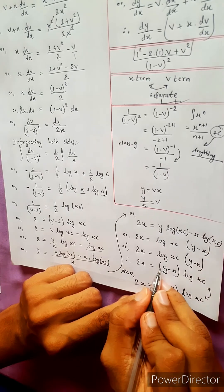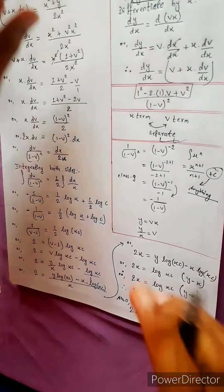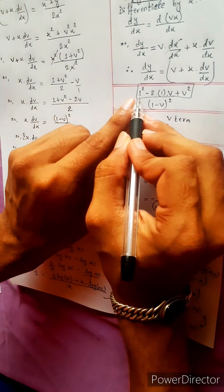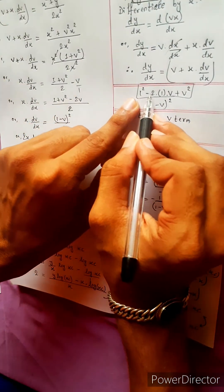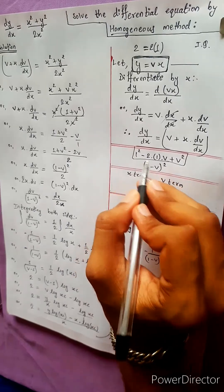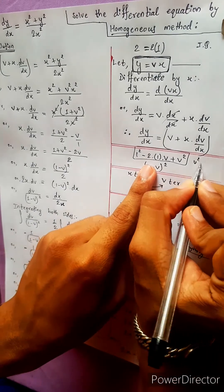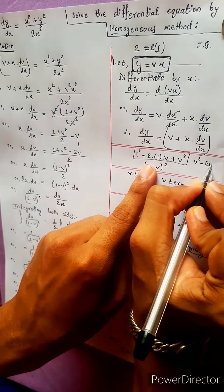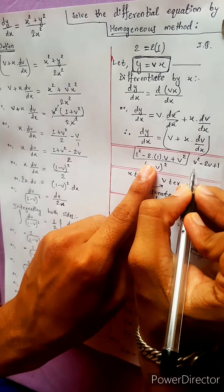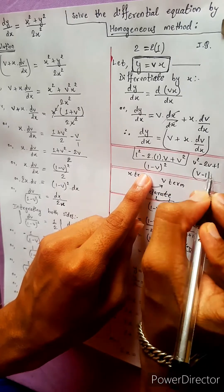We used the formula a squared minus 2ab plus b squared, which equals b minus a squared, to simplify during the working. This formula was key to factoring correctly.